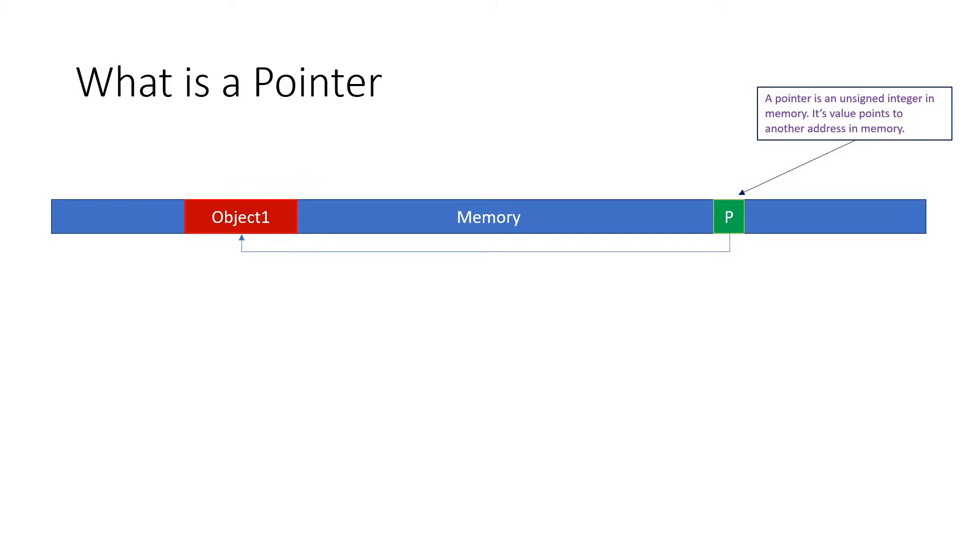In code this would look something like this. Object pointer equals null. We can set a pointer to null or zero because it is an integer.